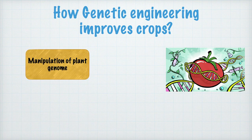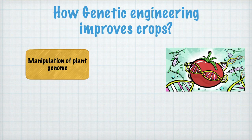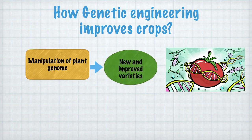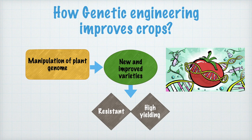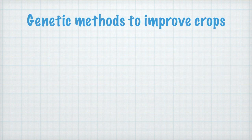Genetic engineering is a manipulation process to either edit, delete, or silence parts of the plant genome, so that beneficial genome can be expressed and harmful or unwanted genome can be silenced or deactivated. In this way, we can improve existing crops or develop completely new varieties that are resistant to harsh conditions or high-yielding. The genetic methods to improve crops are breeding, mutation, and polyploidy.